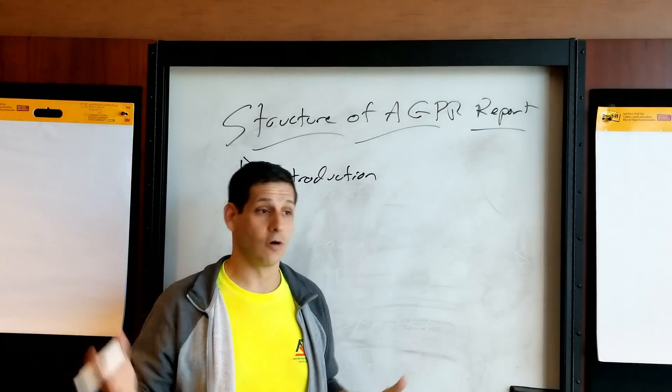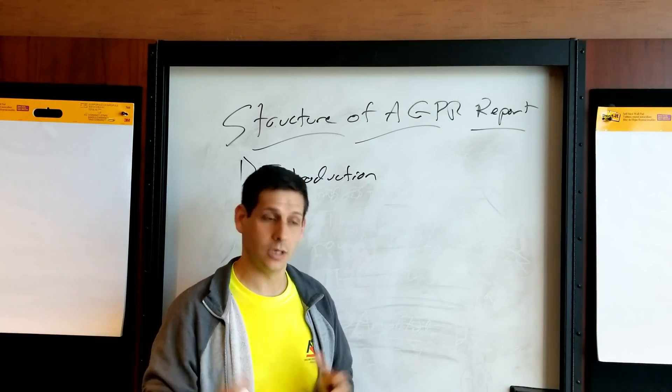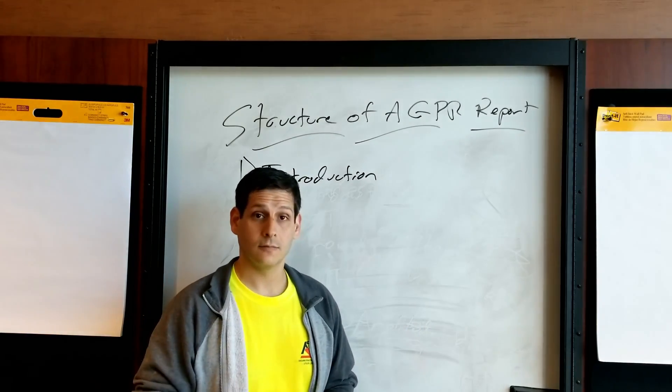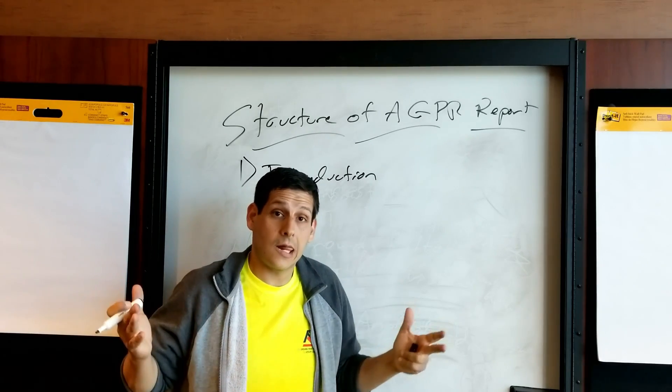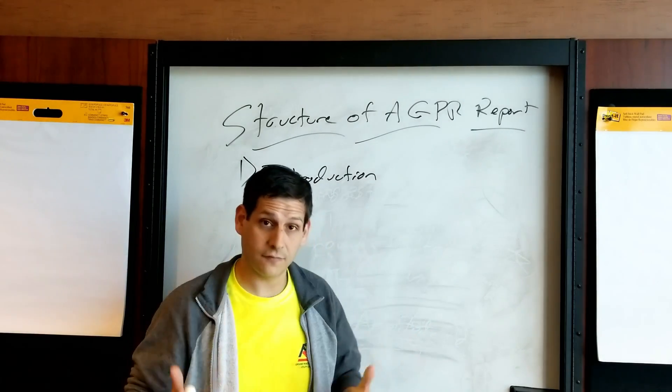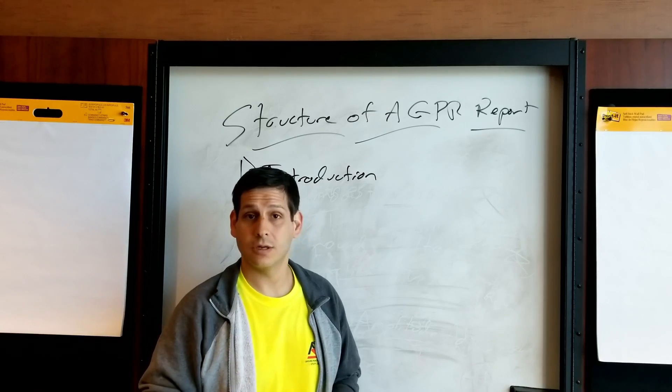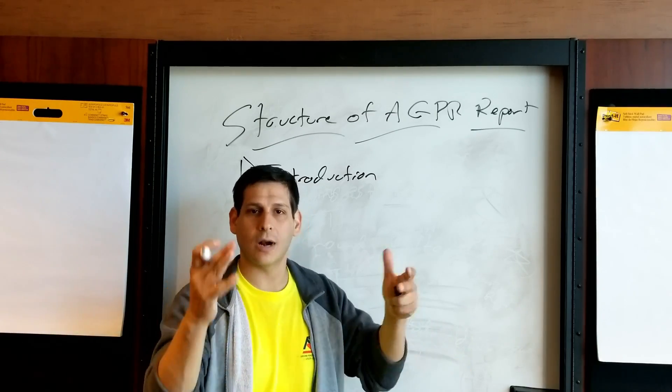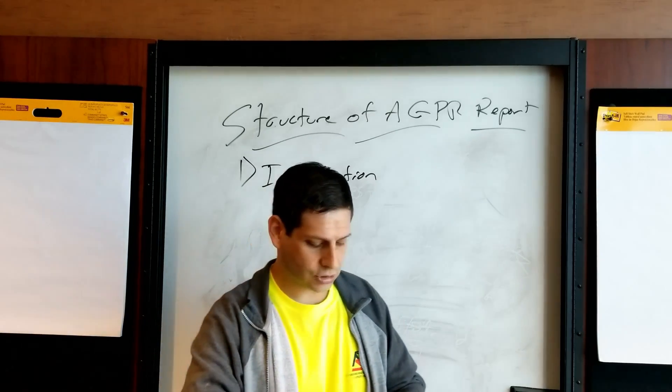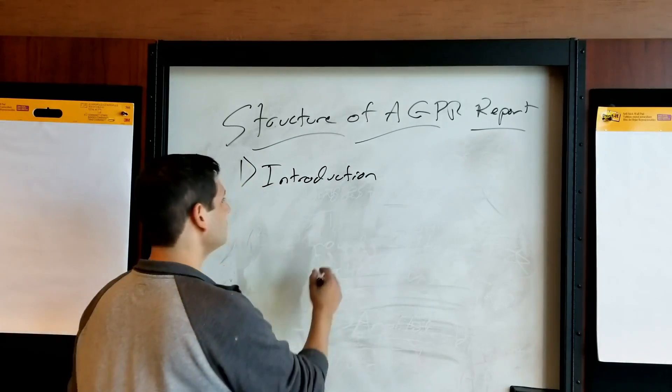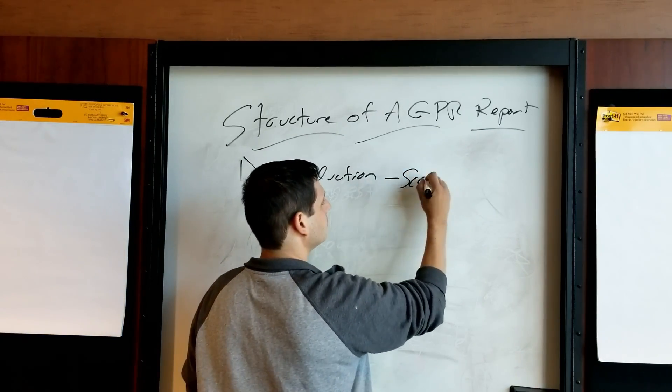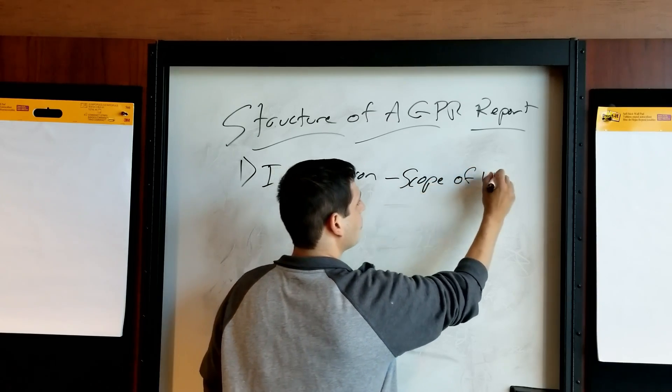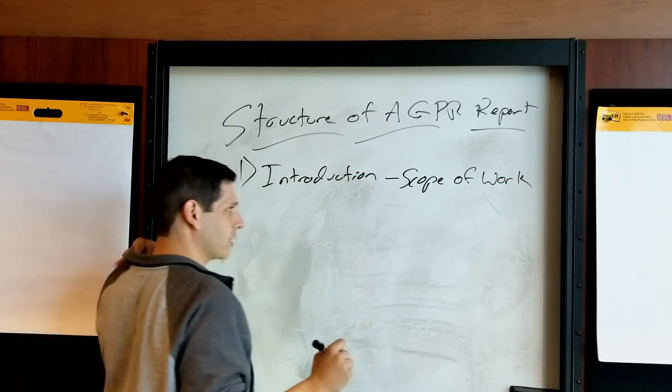So number one is an introduction. Introduction is the first section of the report. Look, I've done reports that use this organization that are one page, and I've used the same exact organization for reports that are 40 pages. So that's a big difference. Even my one-pagers are going to follow the structure that I lay out for you right now. This is the structure. Number one, introduction.